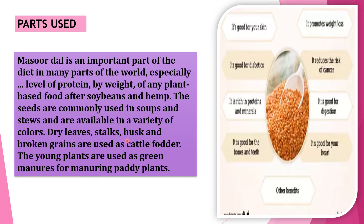Dry leaves, stalks, husks, and broken grains are used as cattle fodder. The young plants are used as green manure for manuring paddy plants. Now, see the diagram — this picture of Masur dal shows its benefits: it is good for your heart, good for digestion, reduces the risk of cancer, promotes weight loss, good for your skin, good for diabetes, rich in proteins and minerals, and good for the bones and teeth.